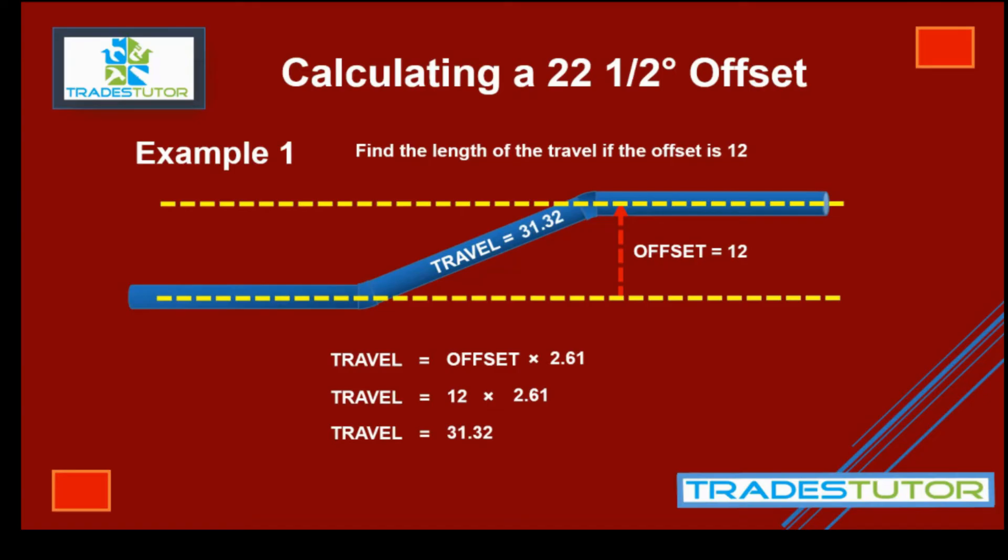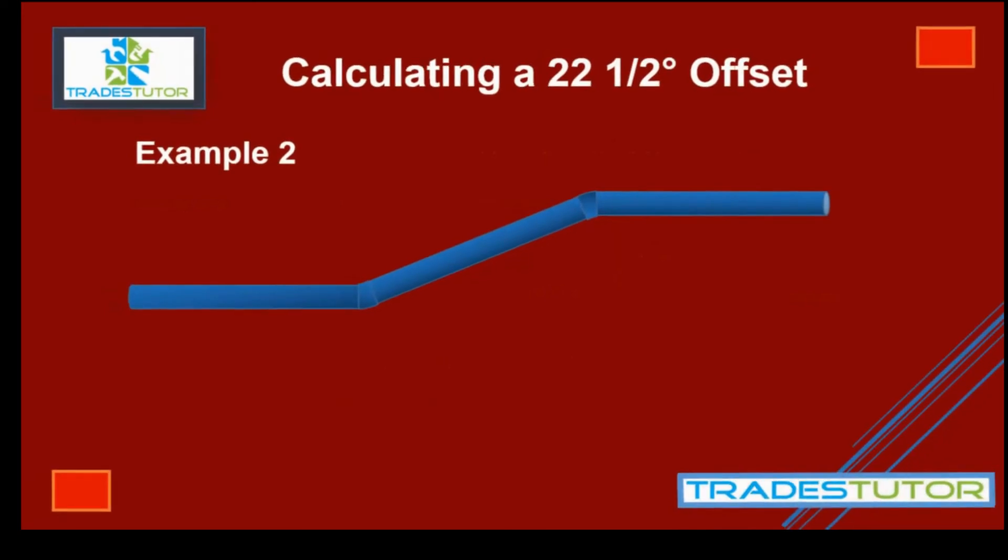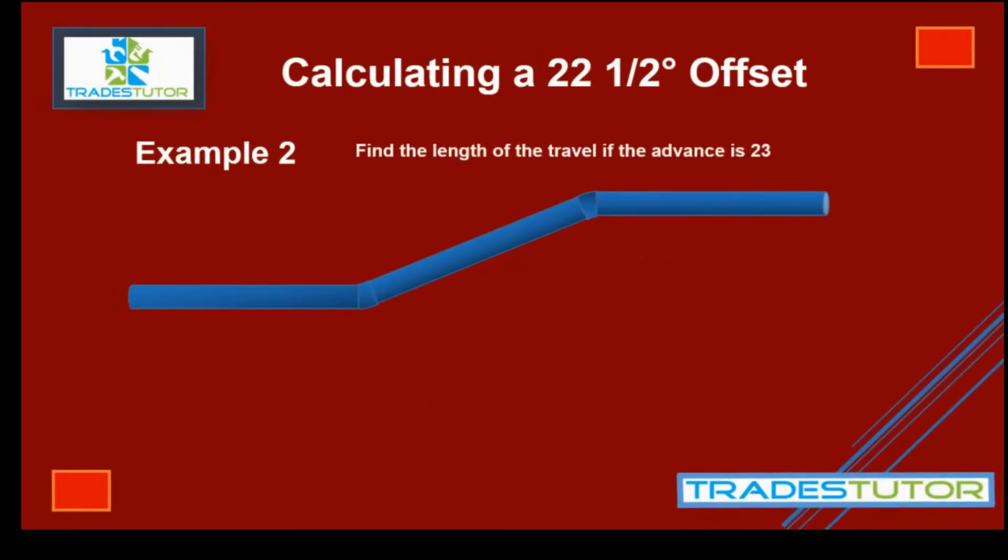All right, should we try another one? Find the length of the travel if the advance is 23. So now we're dealing with the advance and the travel. So we can draw these or put these lines back in. That's the advance, and that's 23.